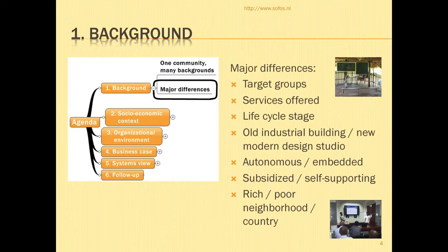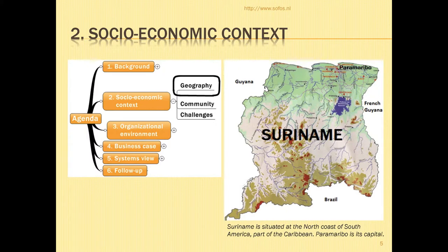One of them especially is Suriname. This is a map of Suriname. Its geography is 400 by 400 kilometres. 90% is tropical rainforest. It is in South America on the north coast, so you can walk to Brazil, and also to French Guiana and Guiana.